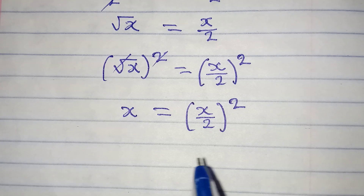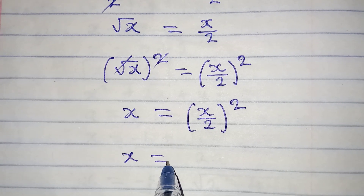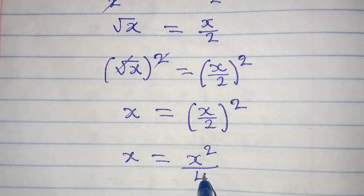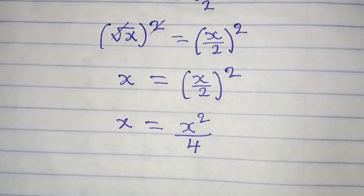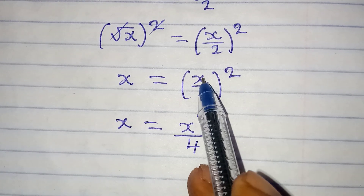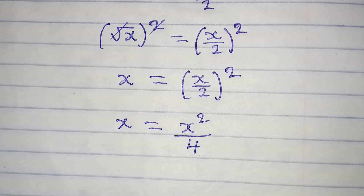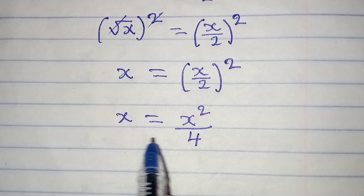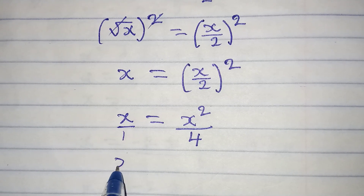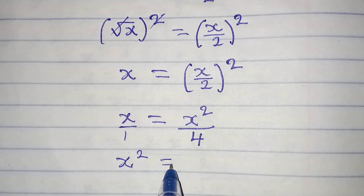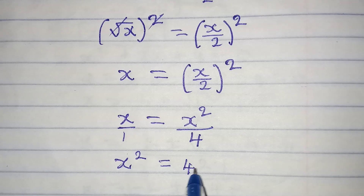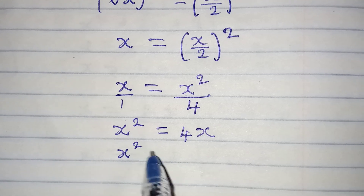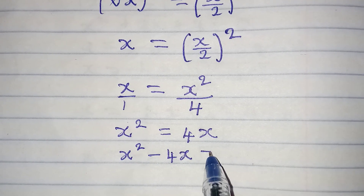So x equals x squared over 4, because 2 squared is 4 — the square applies to both numerator and denominator. Next, cross multiply: x squared times 1 equals x times 4, which gives x squared equals 4x. Bringing everything to the left-hand side: x squared minus 4x equals 0.